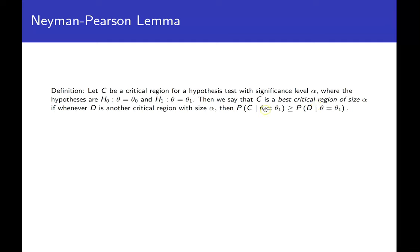Let's talk about what this is actually computing. The critical region C with significance level alpha means this is the probability of rejecting given that the null hypothesis is true — that's the probability of making a type one error. So both C and D have the same probability of a type one error; we're comparing two critical regions with the same alpha.